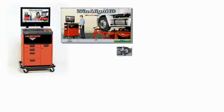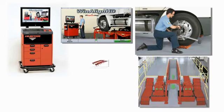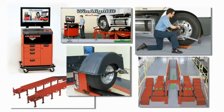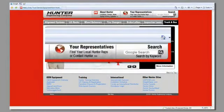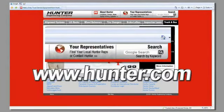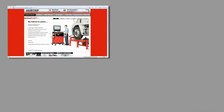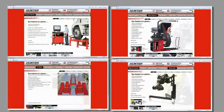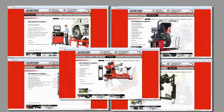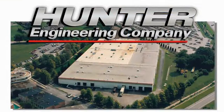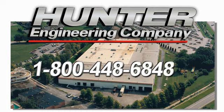For more information on Hunter's heavy-duty alignment and wheel service products, please contact your local field representative. You can find your rep from our website at www.hunter.com. While you're there, look around. There's a wealth of information available. We can also be reached by phone. Give us a call at 1-800-448-6848.